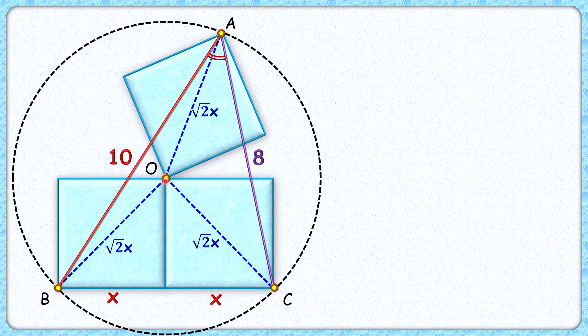Now in a square, diagonal and the side length make an angle of 45 degrees, and thus this angle also is 45 degrees. Now in this circle, let's apply inscribed angle theorem - that is, this chord BC is making an angle of 90 degree at the center of circle.